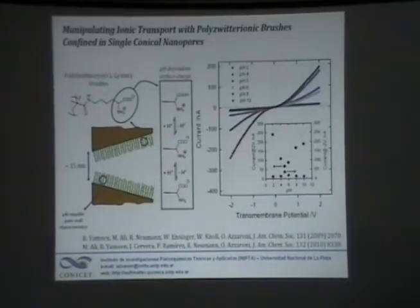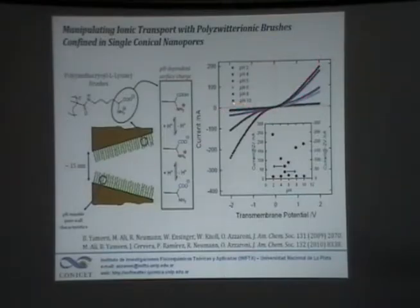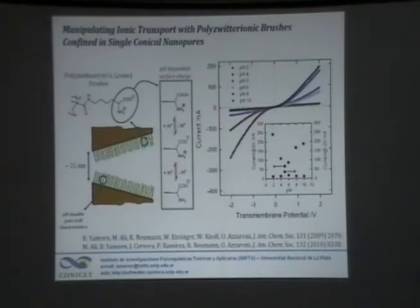We can create a polymer brush with zwitterionic moieties depending on pH — the polymer brush can be positive or negative. If you have a positively charged pore you have one kind of rectification; if you reverse the charge, you have the opposite rectification. So having exactly the same nanopore with exactly the same brush, by changing the pH you can have rectification in one direction or in the opposite direction. Combining polymer chemistry and polymer brushes with concepts based on biophysics can create very interesting approaches to produce nanodevices with well-defined rectification programs.